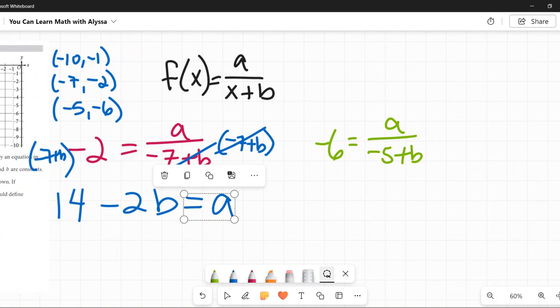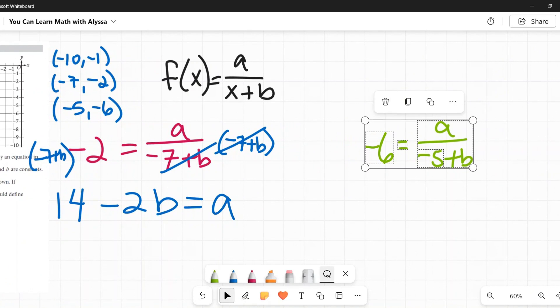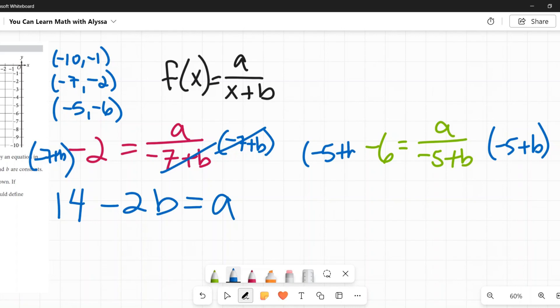Now over here on this side, same thing. I'm going to do the same thing over here. I need to multiply both sides by this here fraction, I need to multiply by the denominator on both sides. Negative 5 plus b. On the right, that cancels those out. And I am just left with a. On the left, I'm going to distribute here. Negative 6 times negative 5 is positive 30. Negative 6 times b is negative 6b. Okay.